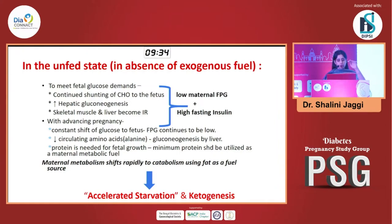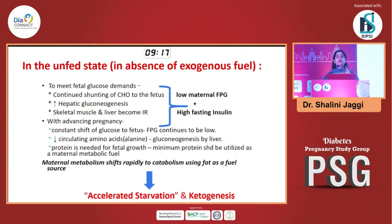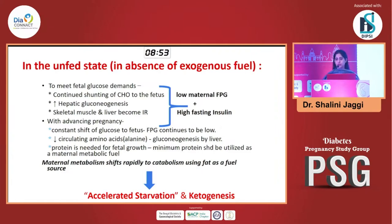As the pregnancy advances, this constant shunting of glucose to the fetus continues, so fasting plasma glucose remains low in a normal pregnancy. Impaired gluconeogenesis is also occurring, so circulating amino acid levels are coming down because these are being utilized for gluconeogenesis. We understand that proteins are very important for fetal growth, so we need to spare this protein for the fetus. This is the time when maternal metabolism will switch its fuel to fat. This is where catabolism using fat becomes the main source in a normal pregnancy, and that is why we say a normal pregnancy is associated with accelerated starvation and ketogenesis.